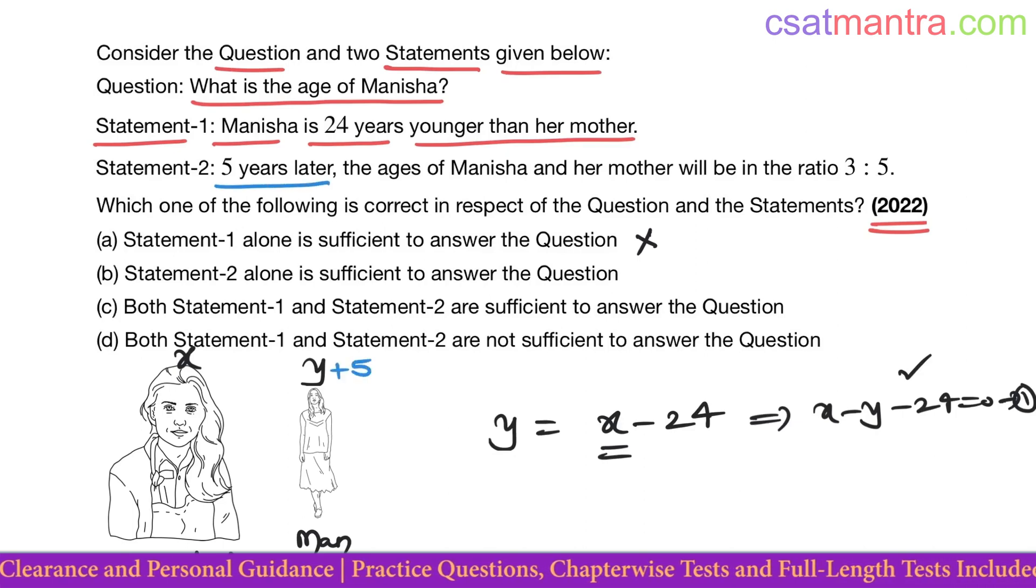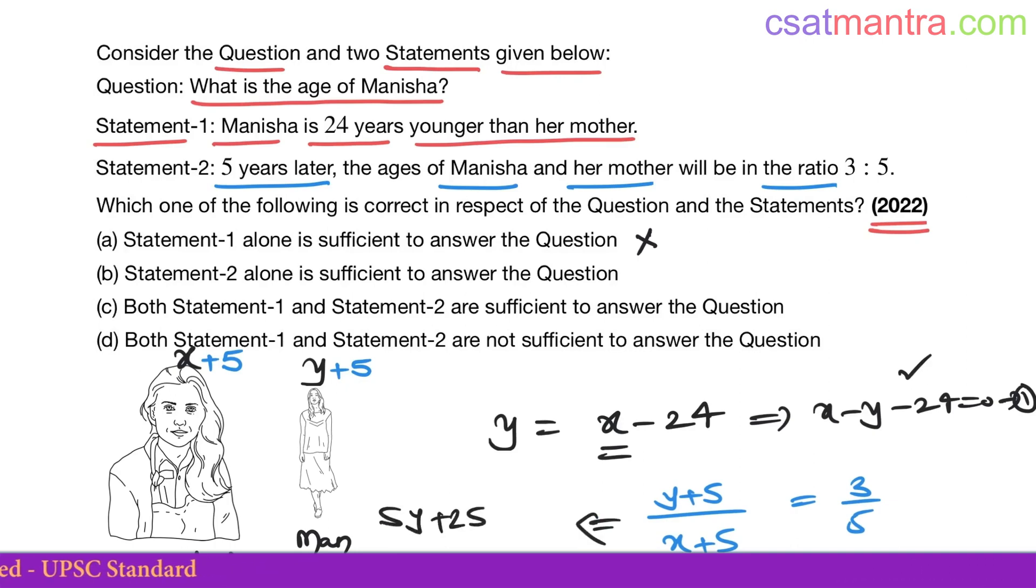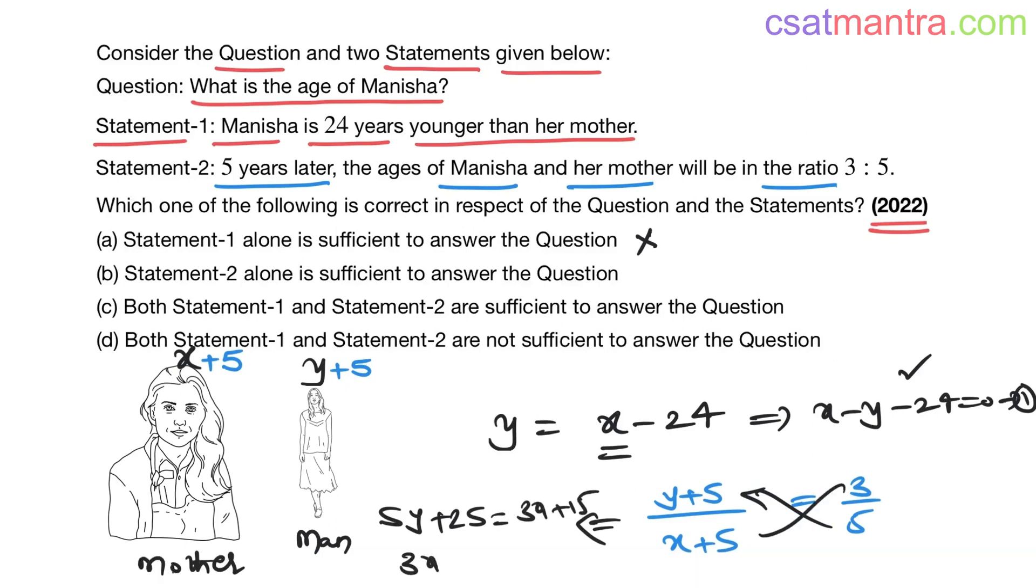Now five years later, Manisha's age would be y plus 5, her mother's age would be x plus 5. These are in the ratio 3 by 5. The ages of Manisha and her mother will be in the ratio 3 to 5. From this you can get an equation: 5y plus 25 equals 3x plus 15. So 3x minus 5y equals minus 10. This is equation number 2.